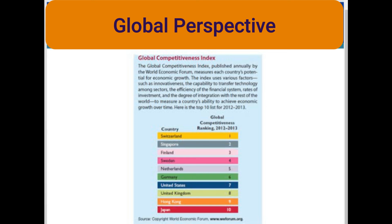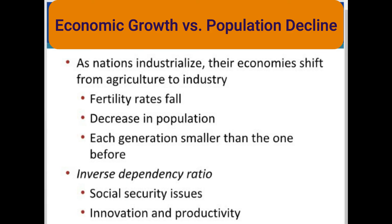The global perspective lists the top 10 countries based on the Global Competitiveness Index. The index uses factors like innovativeness, the capability to transfer technology among sectors, efficiency of the financial system, rates of investment, and the degree of integration with the rest of the world. As nations shift from agriculture to industry, fertility levels plummet and birth rates fall dramatically. The labor force is shrinking while the population swells, resulting in each generation being smaller than the one before. This trend is known as the inverse dependency ratio.